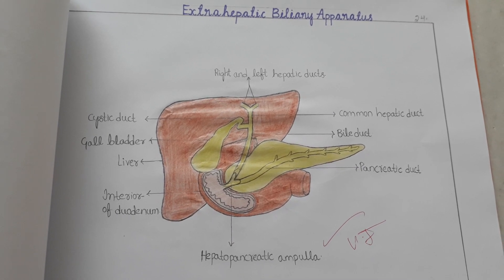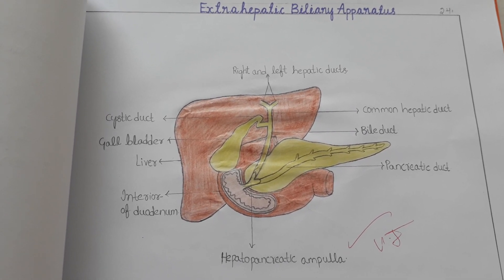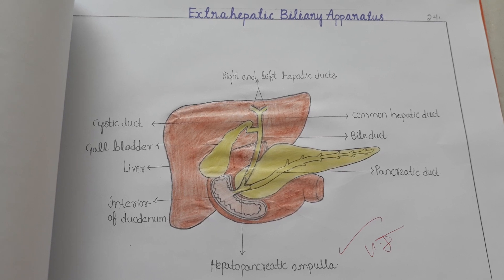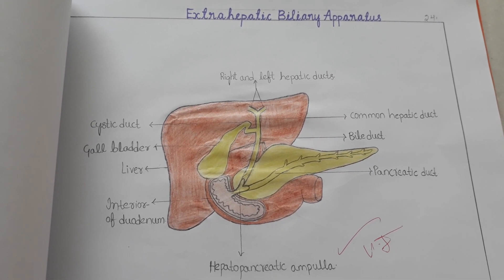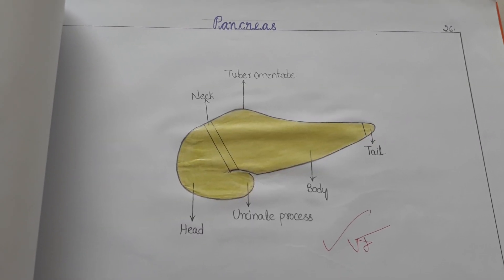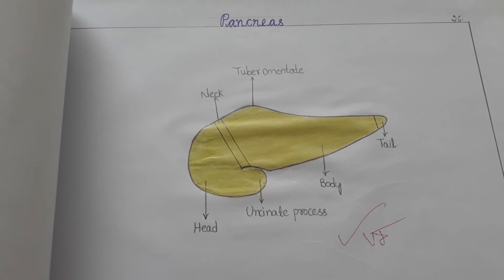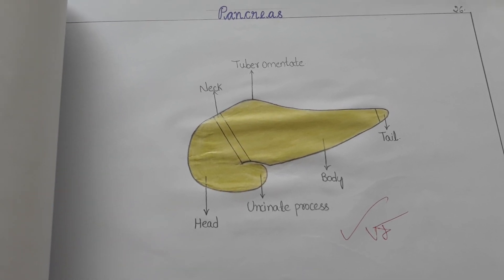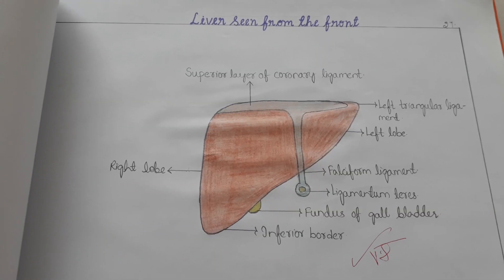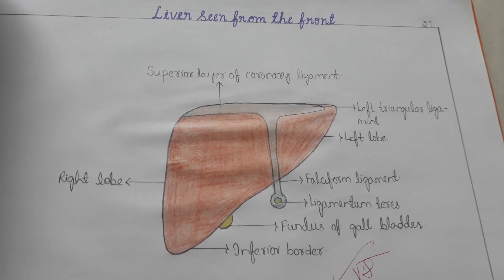This is the extra-hepatic biliary apparatus. This can be asked as a short note in your theory examination, and also as a spotter — especially the liver. Whatever pictures I have drawn, whatever names I have given — everything across the skeletal system and organs was clearly explained and given to us to practice. This can definitely be given as a spotter, so go through it.